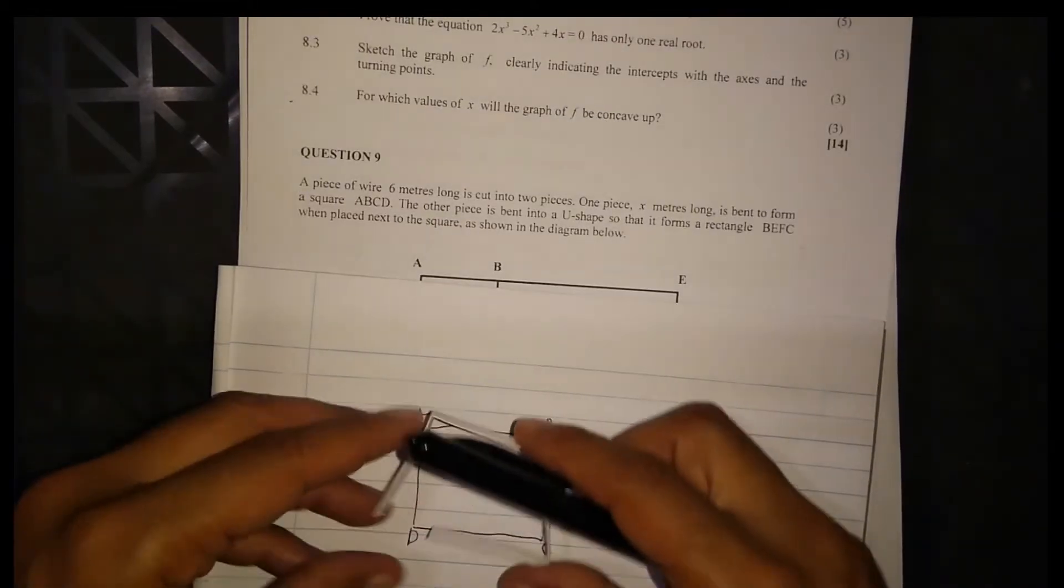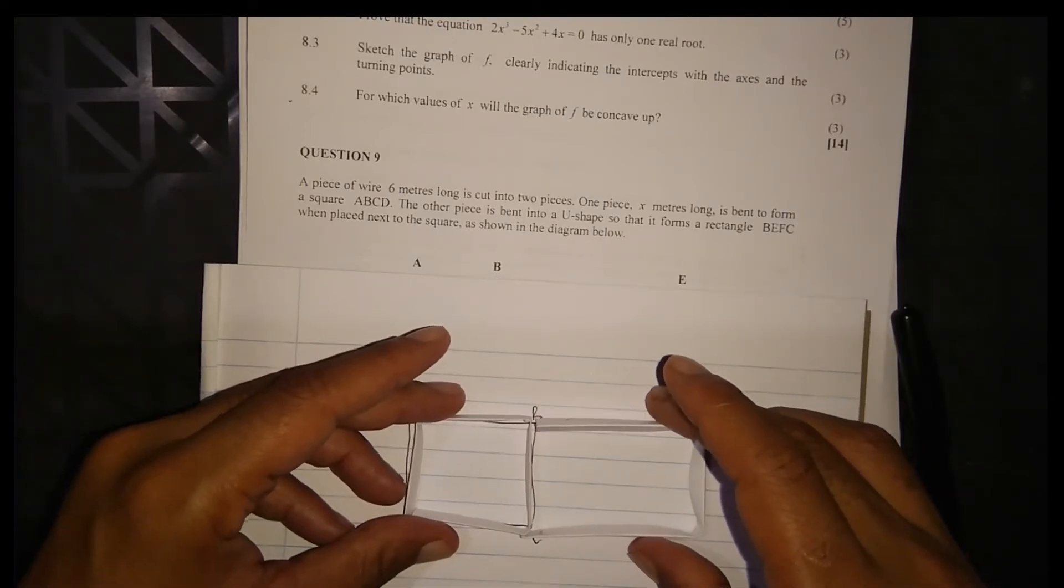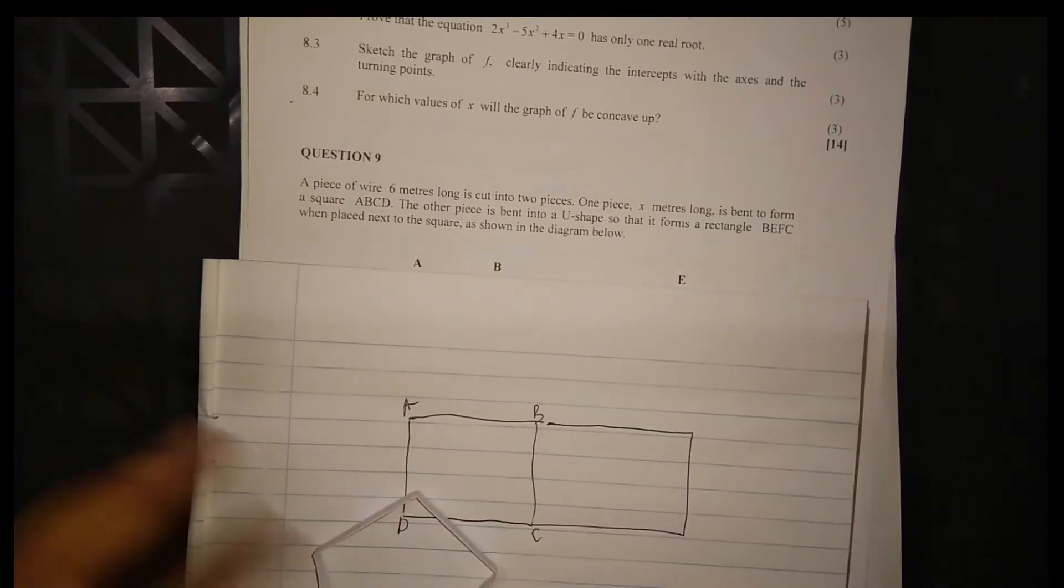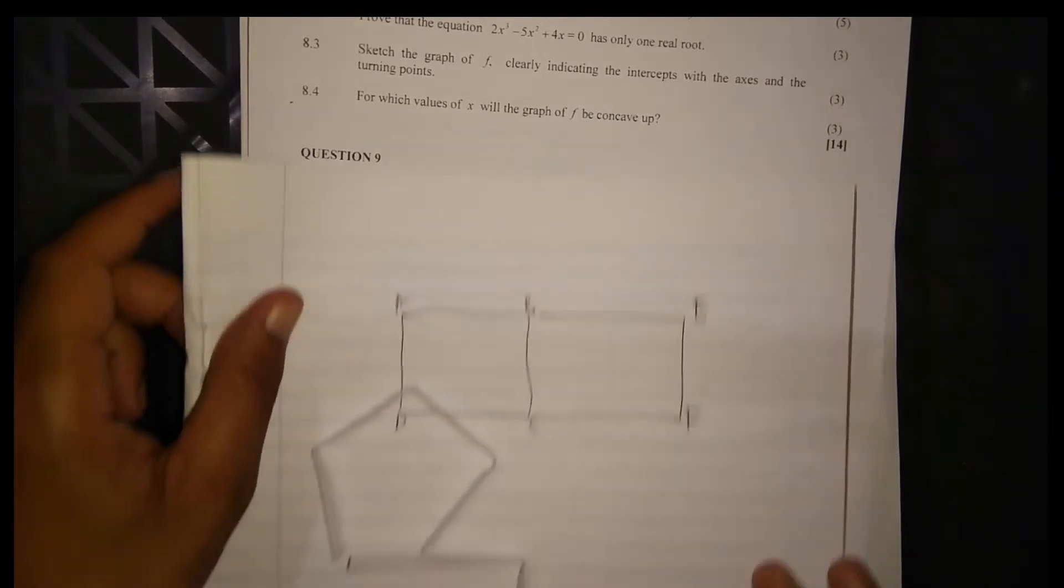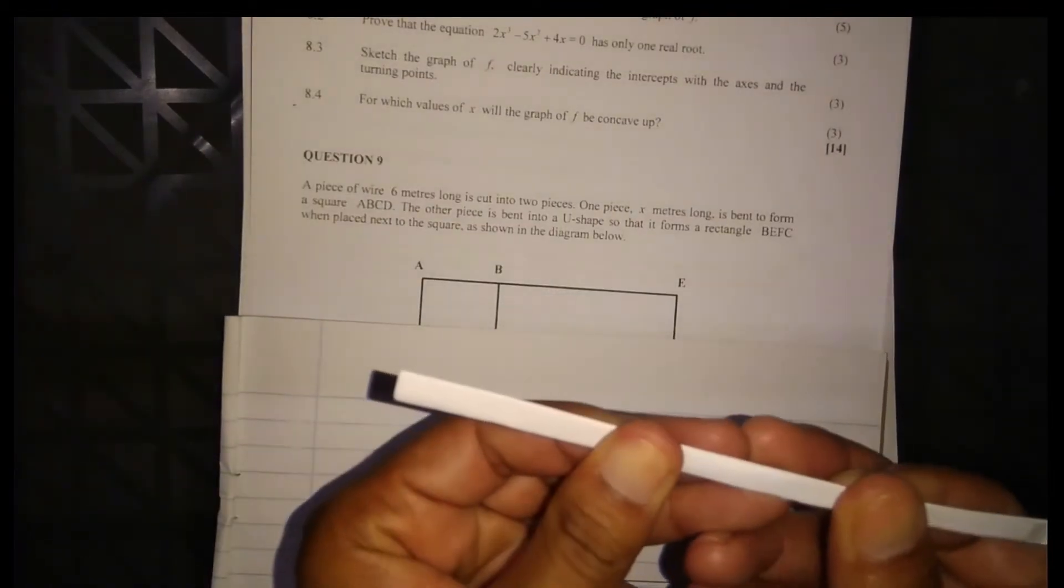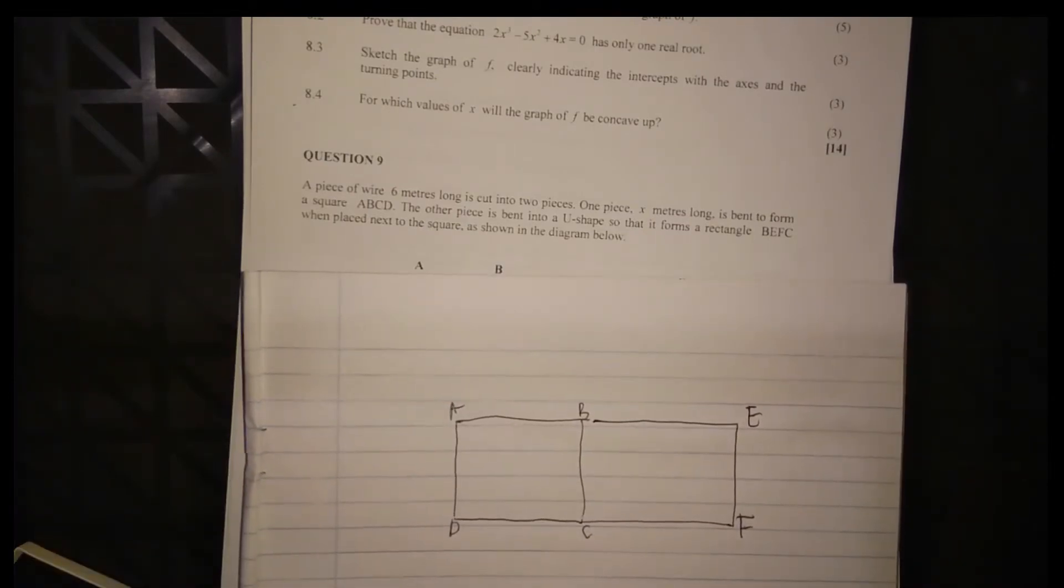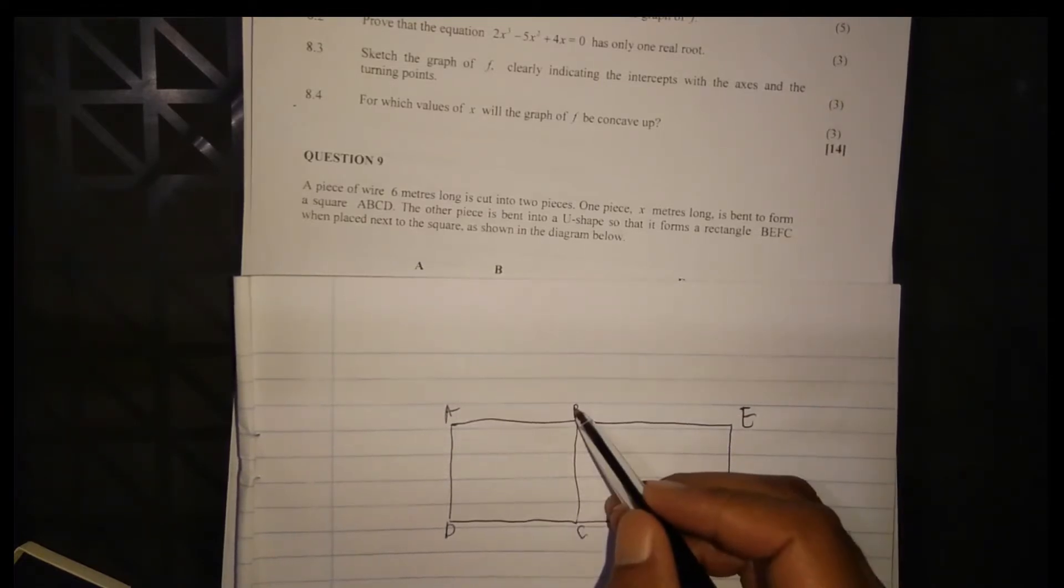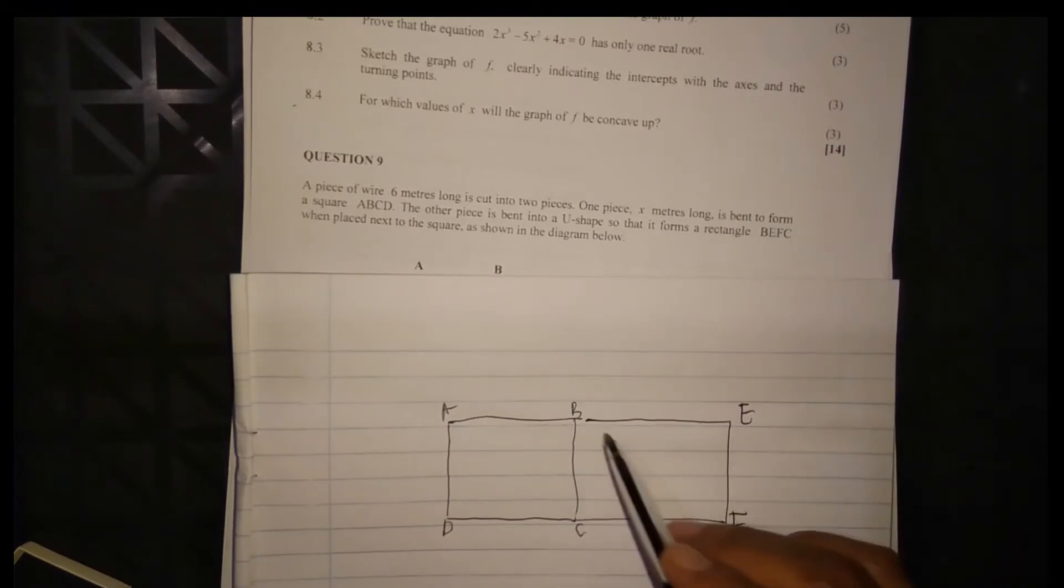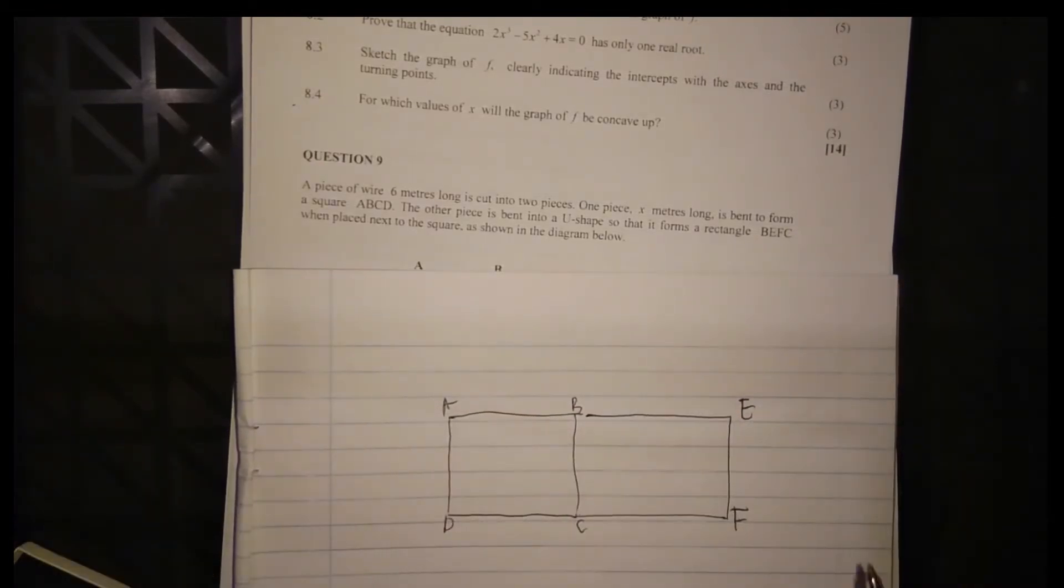So this is the square, and this is the U-shaped piece placed next to the square. The U-shape forms BEFC. This is x meters long for the square. The other piece would be how many meters long? Let me demonstrate so you understand much better. This entire piece from A to B to C to D is x meters long, and then all the way up to here is the other piece, the longer piece.